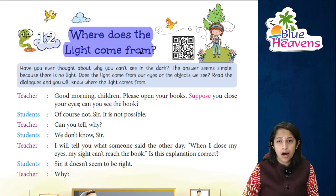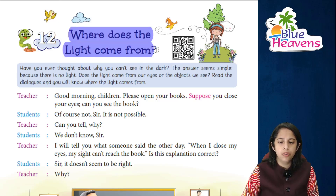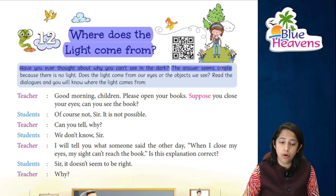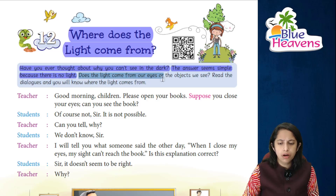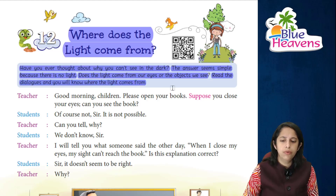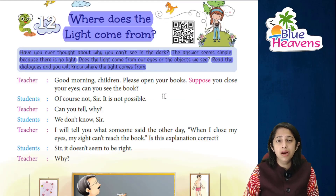The chapter title is 'Where does the light come from?' — kahaan se aati hai. 'From' is a preposition and a W-question. Have you ever thought about why you can't see in the dark? The answer seems very simple — because there is no light. But does light come from our eyes, or from the objects we see? We'll read the dialogues to understand where light comes from.